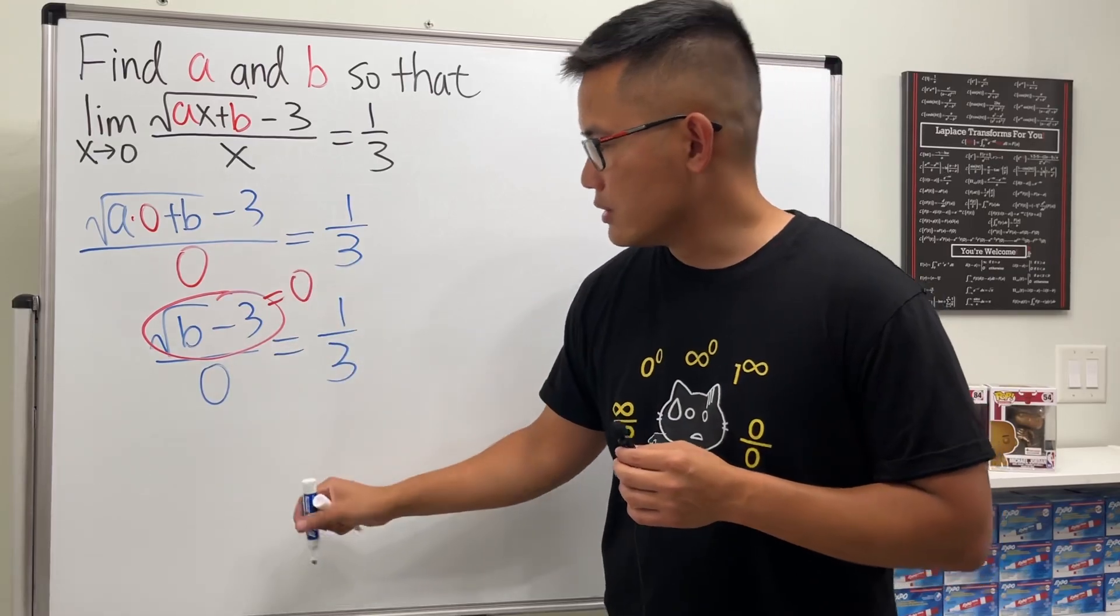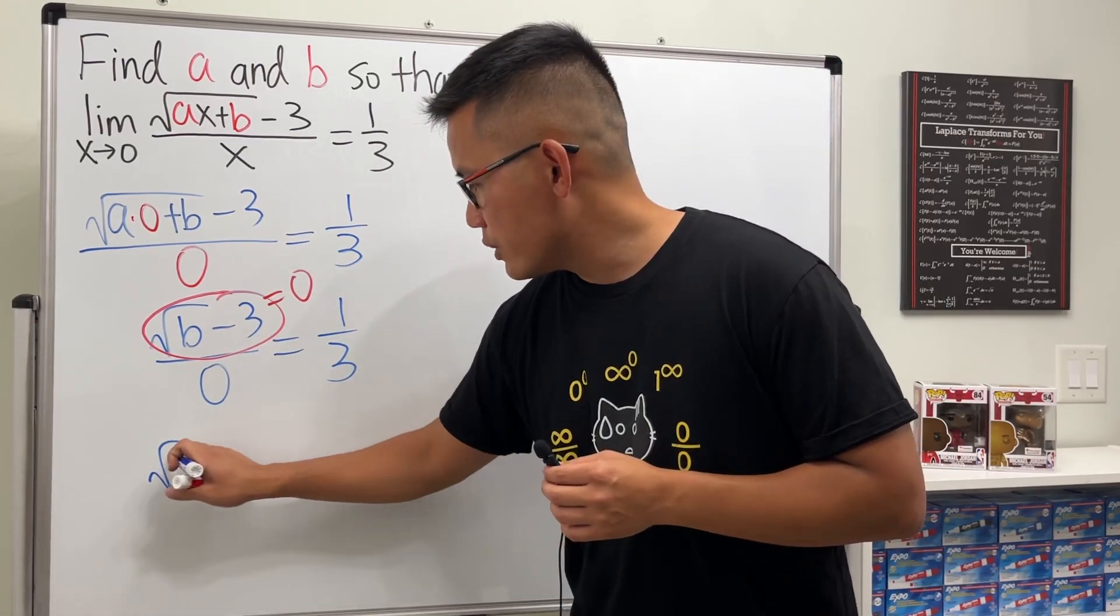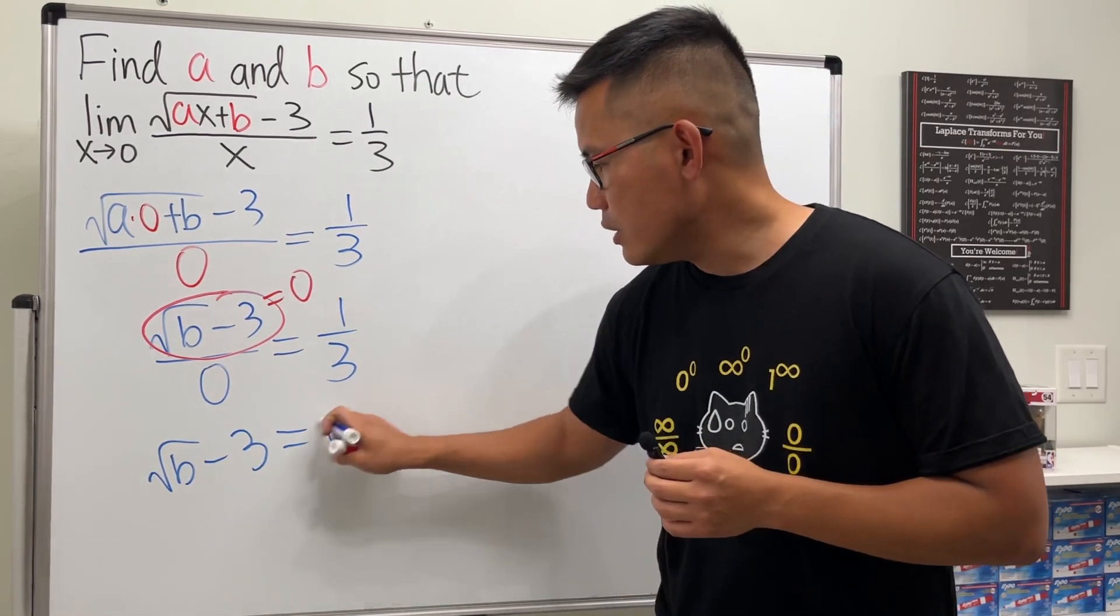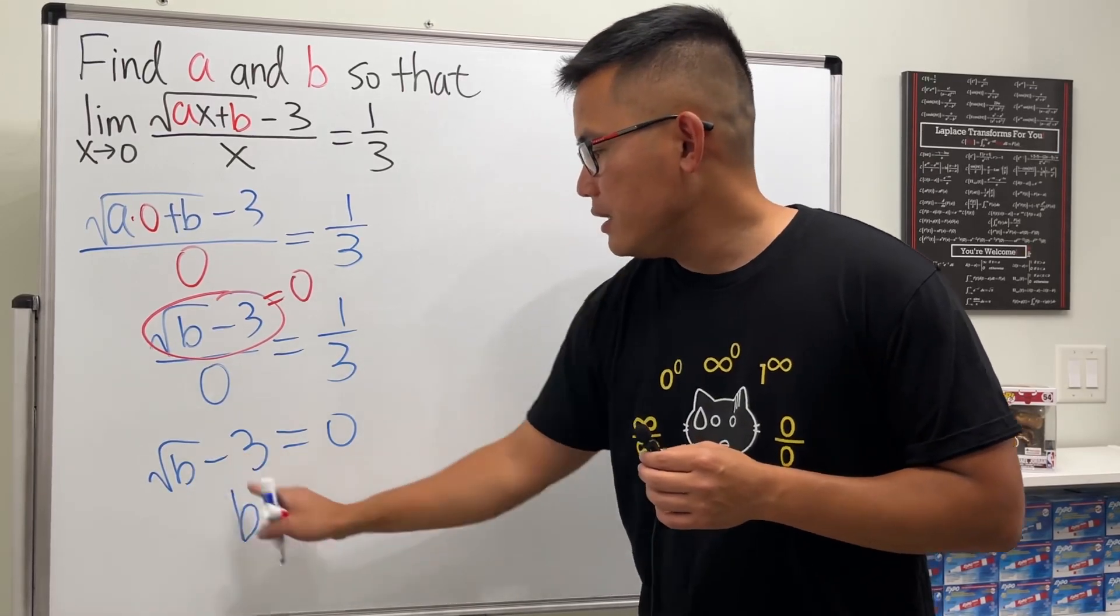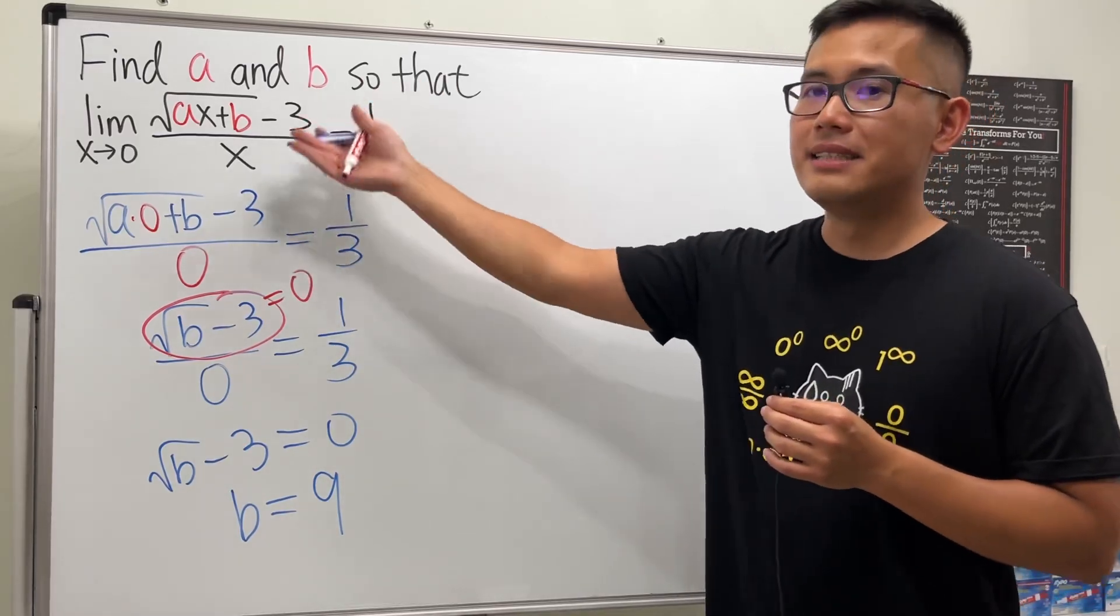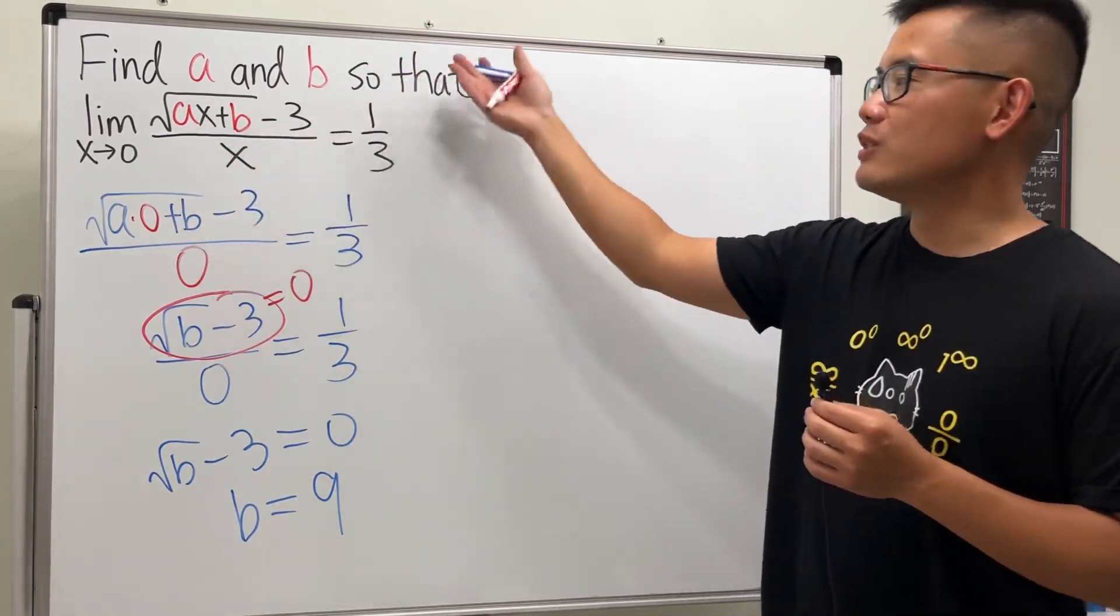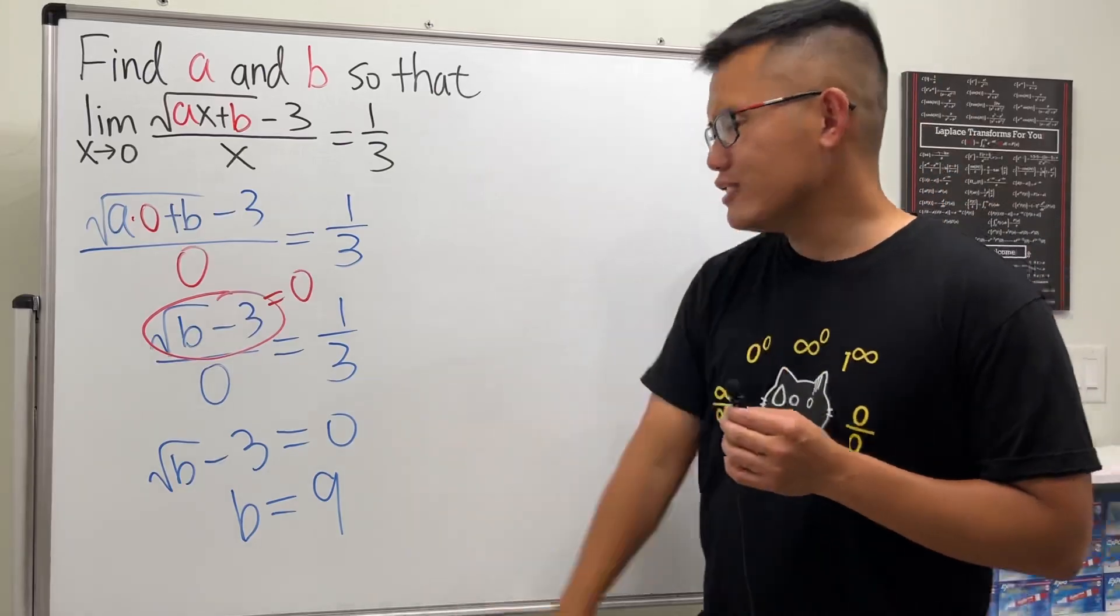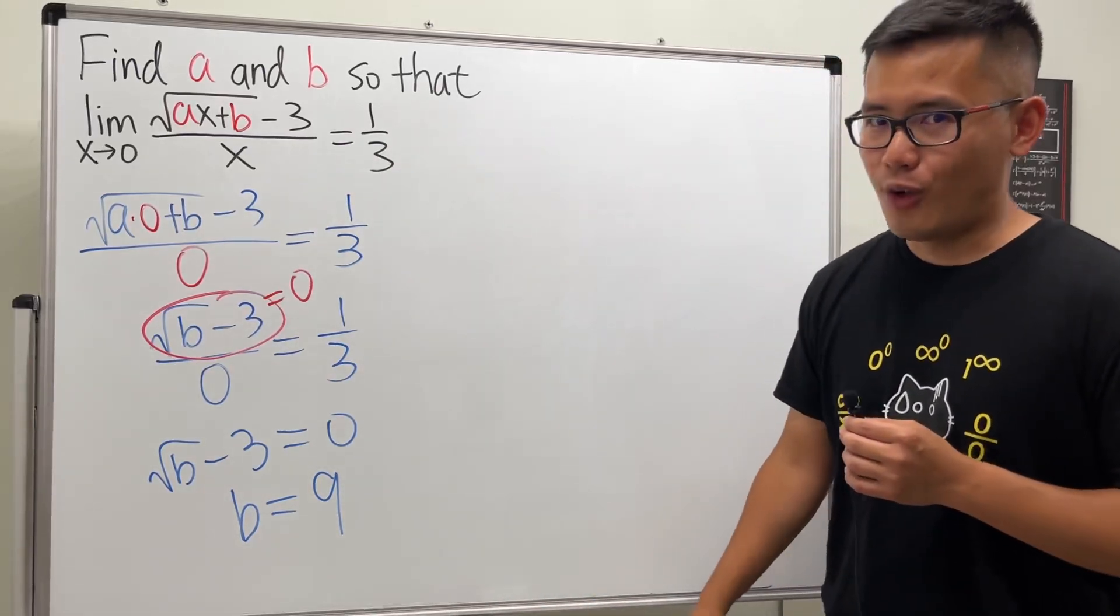So the best bet is that we are going to make this equal to zero. So that means square root of b minus three is equal to zero, so we conclude that b is equal to nine. And again, remember we are trying to design this limit so that the answer is one over three—b has to be equal to nine.